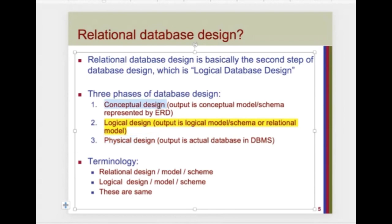In conceptual design we made our ER diagram. In logical design, which we are going to make today, we produce the relational schema — tables linked together with constraints: primary key, key, domain, and referential integrity constraints. The question is how we go from step one to step two.